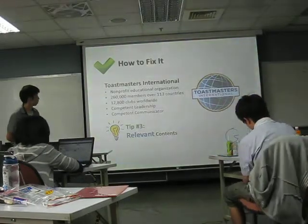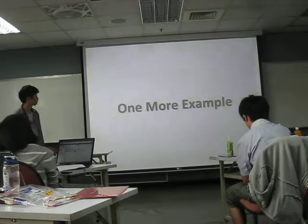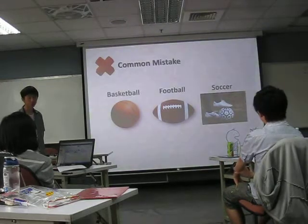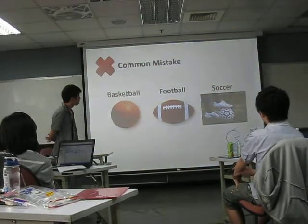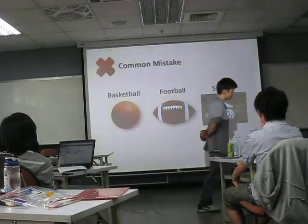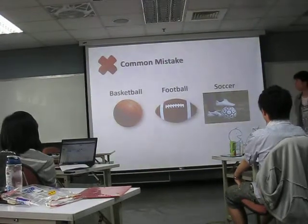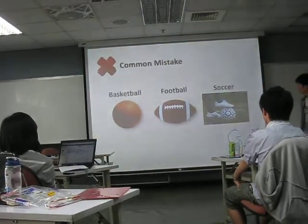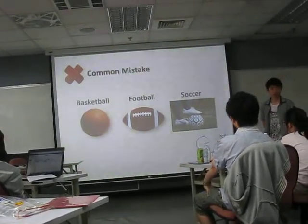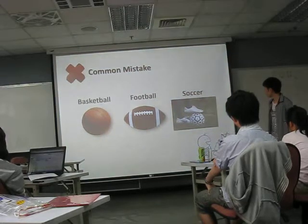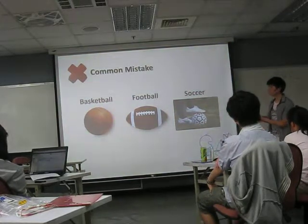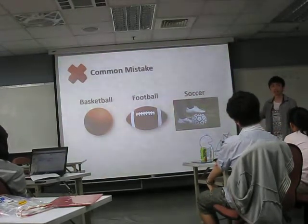Let us look at another example. Now this is a tricky one. Imagine today I'm going to talk about the three kinds of balls in three different kinds of sports — like basketball, football, and soccer. I have the basketball on the left side, the football in the middle, and a soccer ball on the right side. But there's a little flaw in this page. This is not really wrong in a sense, but it is a flaw.